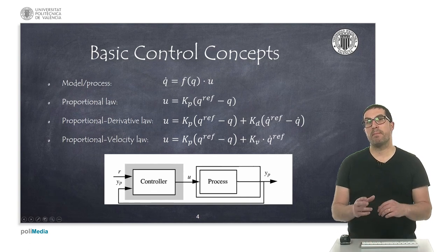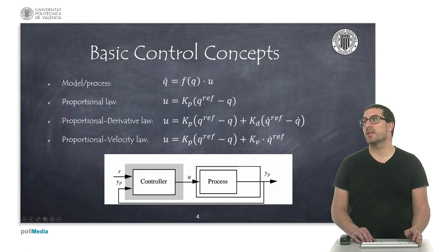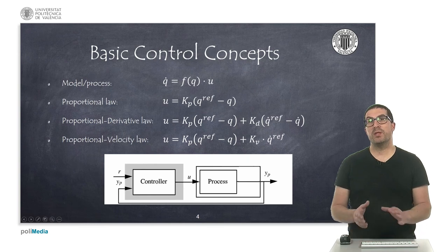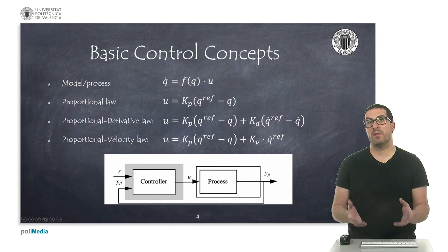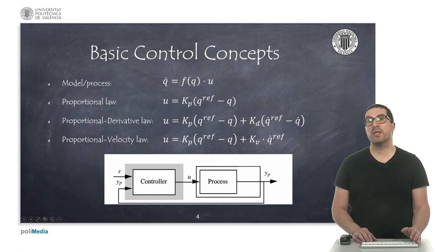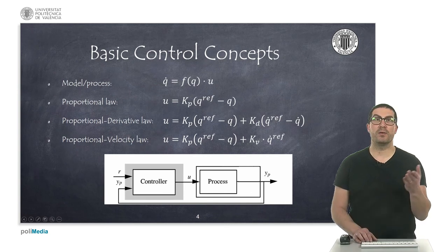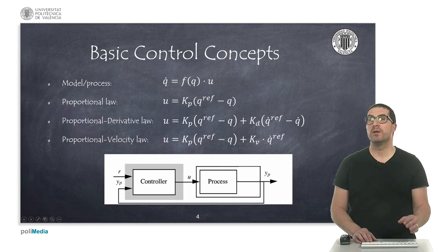Proportional velocity control uses a feedforward reference for the speed. These controllers do not include any kind of integral action because the process itself — the robot — already includes this integrator by integrating the model or process equation over time.